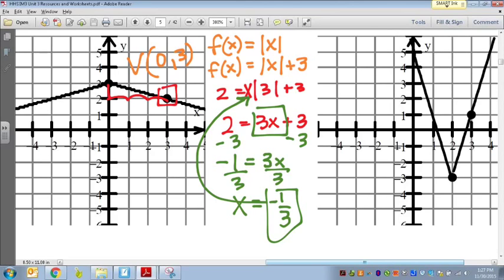So the final function for the problem on the left is f of x equals negative 1 third absolute value of x plus 3. Let's go ahead and do the problem on the right-hand side.